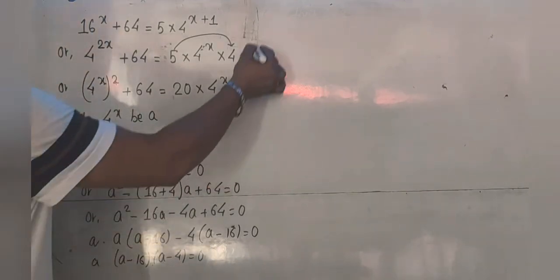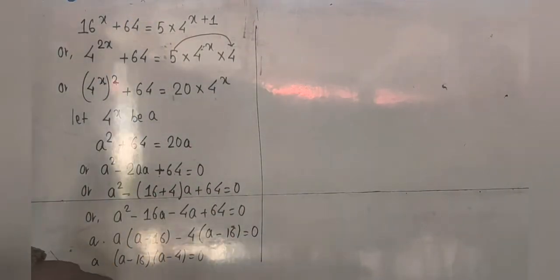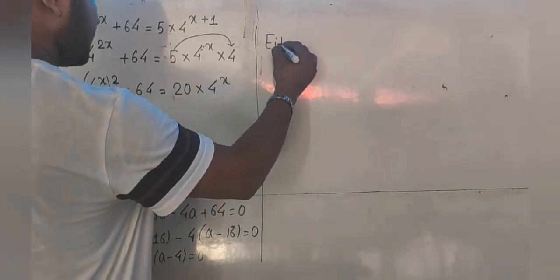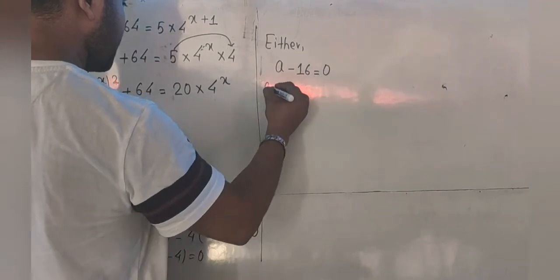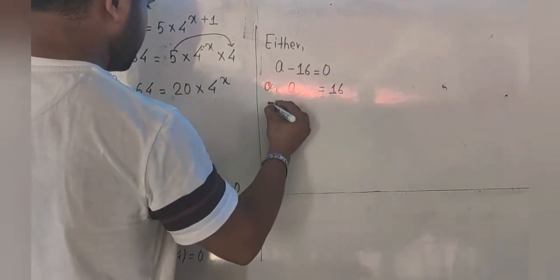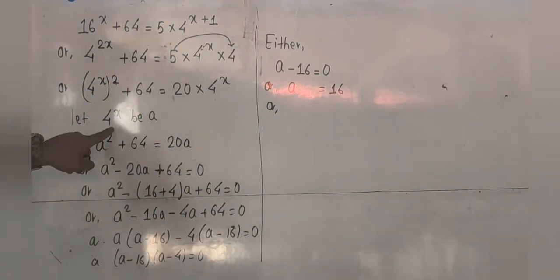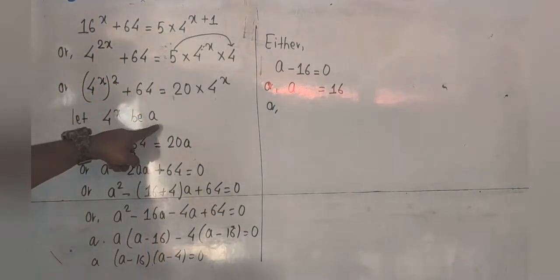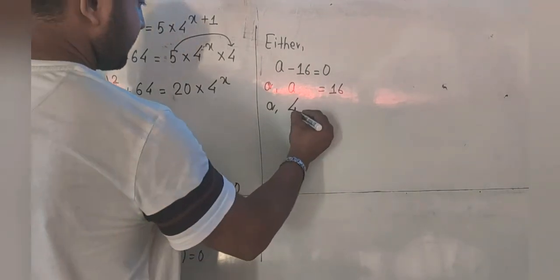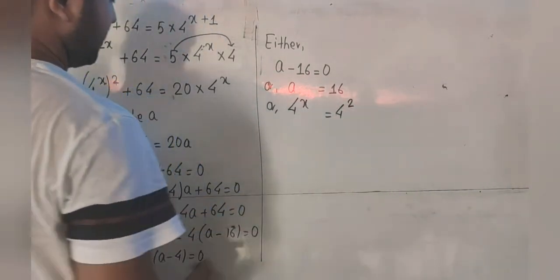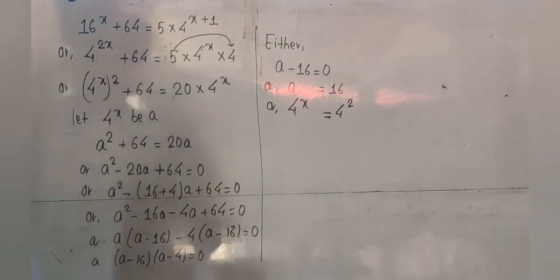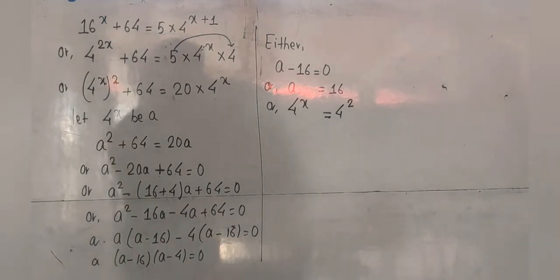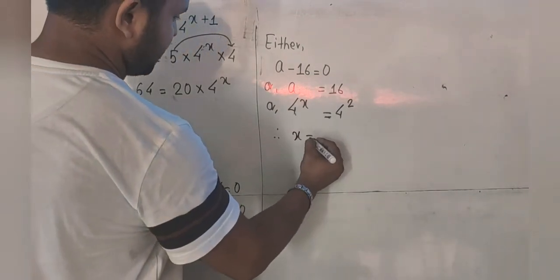Now we have two possibilities. The first possibility is a minus 16 equals 0, which gives a equals 16. Now, since we supposed 4 power x to be a, in place of a I can write 4 with the power x, and in place of 16 I can write 4 squared. Since the bases are same and there is an equal sign in between, by the rule of indices their exponents are also equal. So x equals 2.